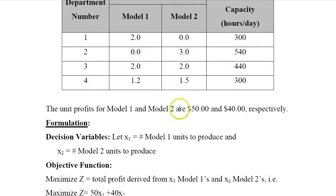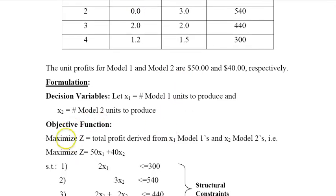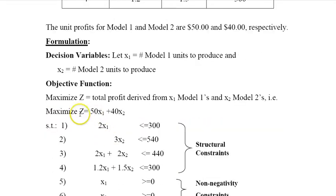Second, you want to decide the objective function - what's our objective? In this case, we want to maximize profit, call it Z, the total profit derived from x1 and x2. So it's maximize 50x1 - how many models we produce times 50 dollars per each model - plus the number of models we produce times the unit profit, so that's 50x1 plus 40x2.